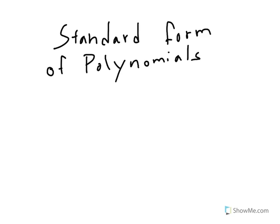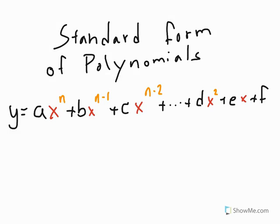This video is going to be on the standard form of a polynomial. Here I've written the standard form in generic or general form. Basically, A, B, C, D, E, and F, all the things in black, are constants. There will be some number like 2 or 5 or negative 7 that won't change in the equation.